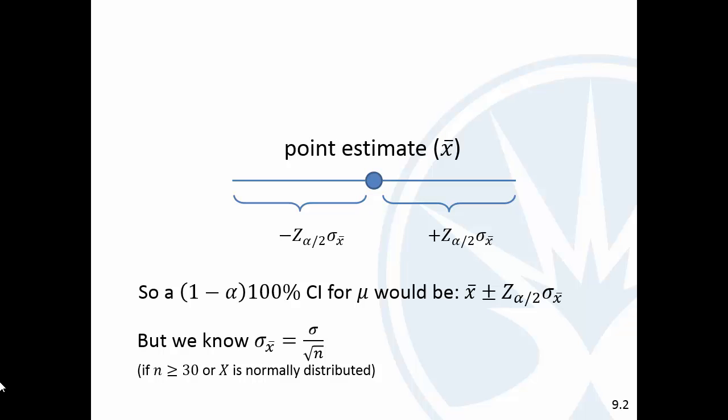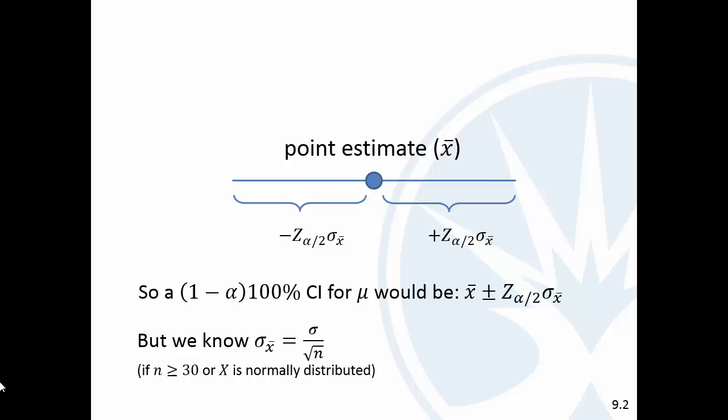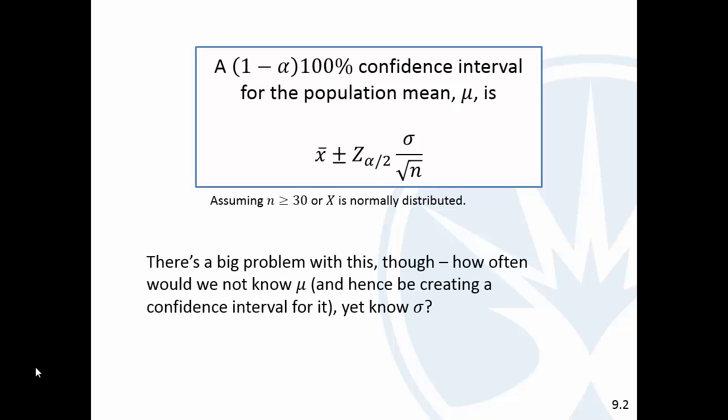And we know what sigma x-bar is if the sample size is greater than or equal to 30 with no outliers, or x is normally distributed. And so, we can get a confidence interval for the population mean, which is x-bar plus or minus z alpha over two times sigma over square root of n. There's a big problem with this, though. You have to look at this formula, and it has this x-bar, so your sample mean, plus or minus a z, and then it has the population standard deviation in the formula,